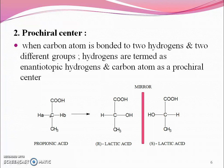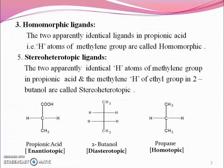When a carbon atom is bonded to two hydrogens and two different groups, the hydrogens are termed as enantiotopic hydrogens and the carbon atom as a prochiral center. Propionic acid can be converted into lactic acid as the R isomer and the S isomer. The two apparently identical ligands in propionic acid — that means the hydrogen atoms of the methylene group — are called homotopic ligands.